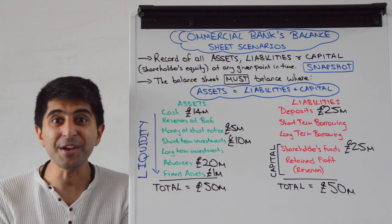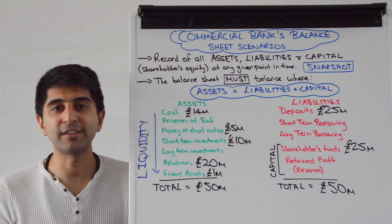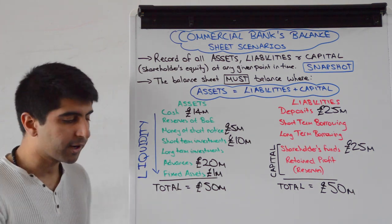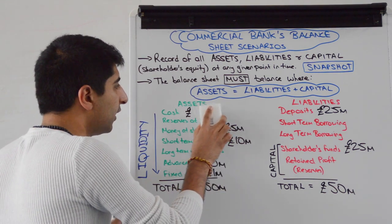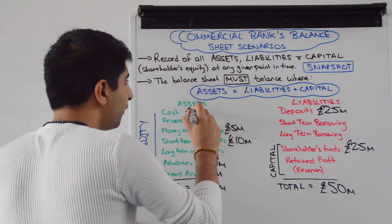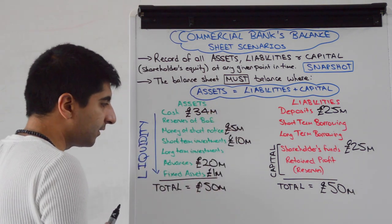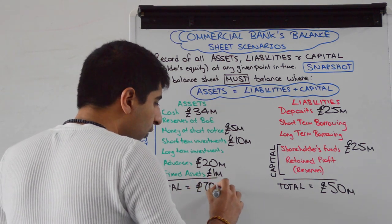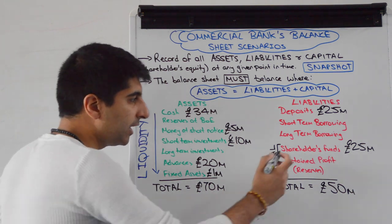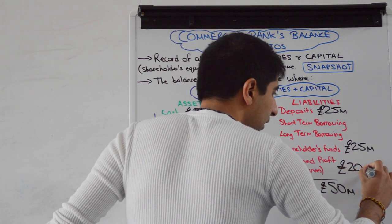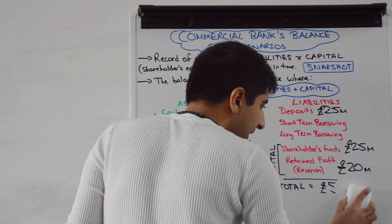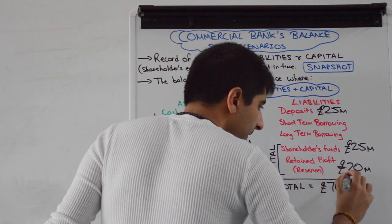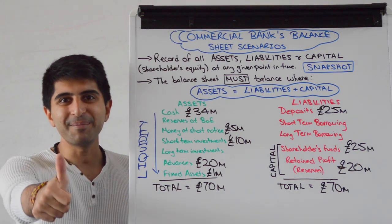Let's say the commercial bank earns 20 million pounds worth of interest from the bonds it's holding — ridiculous, I know, but let's go with it. That's an increase in cash from 14 million to 34 million pounds, which increases total assets from 50 million to 70 million pounds. On the liability side, it's an increase in retained profit of 20 million pounds, increasing total liabilities from 50 million to 70 million pounds. We have a balanced balance sheet.